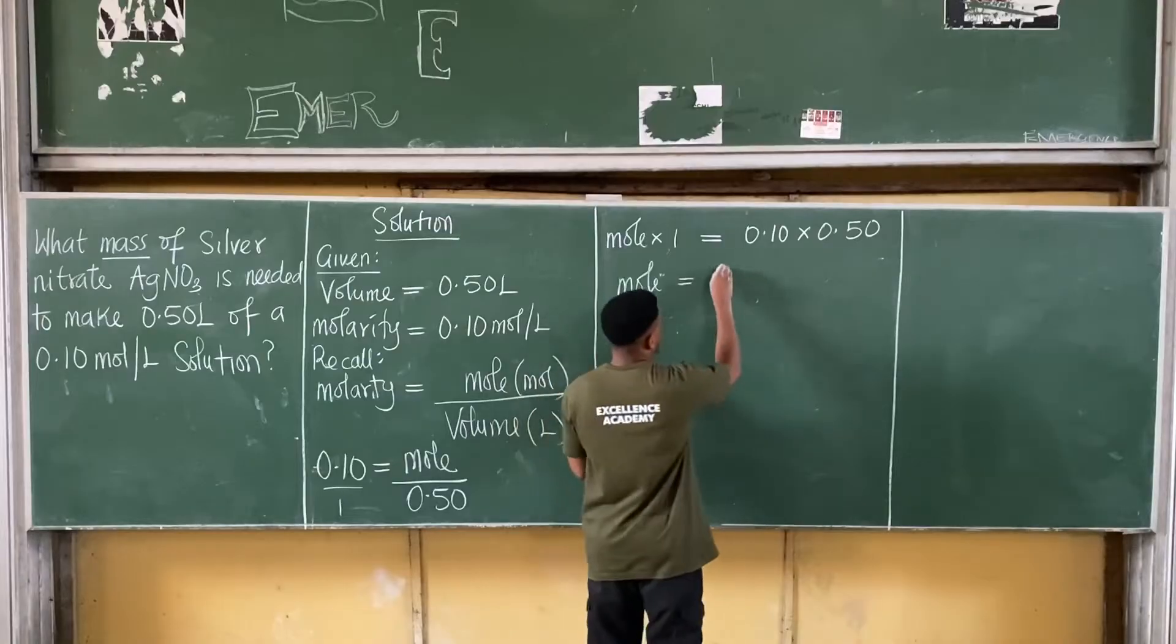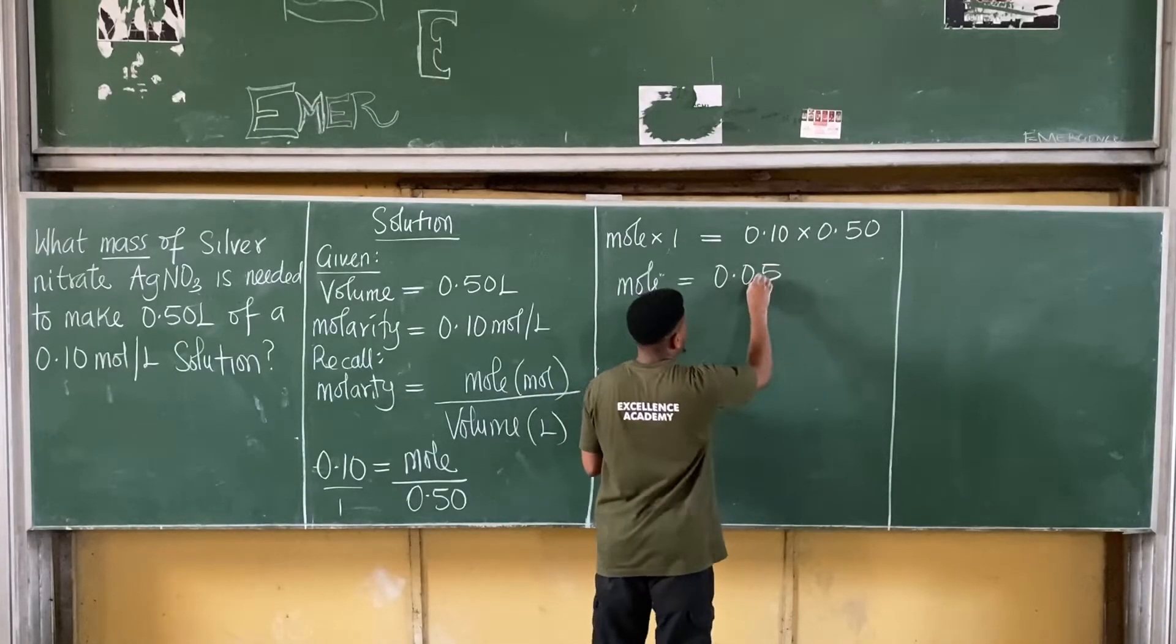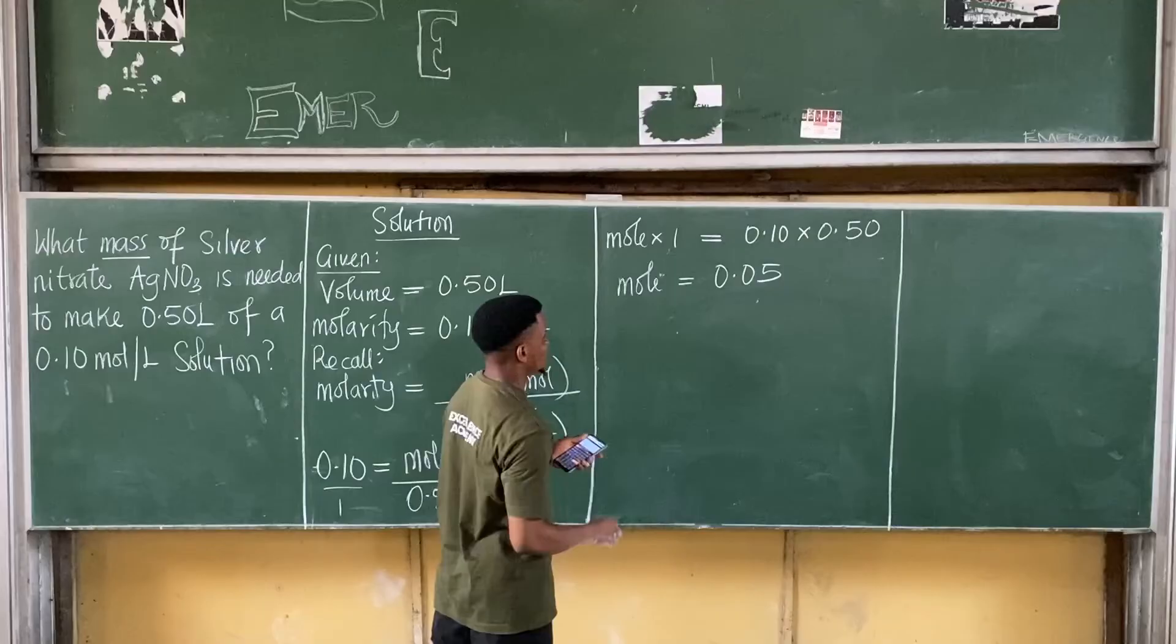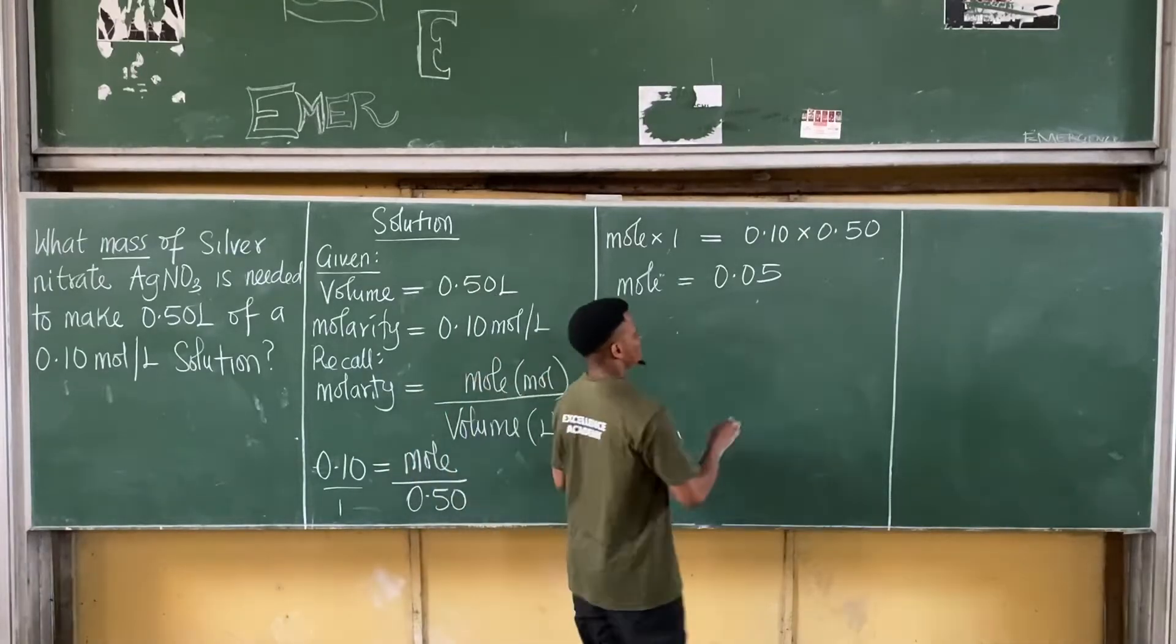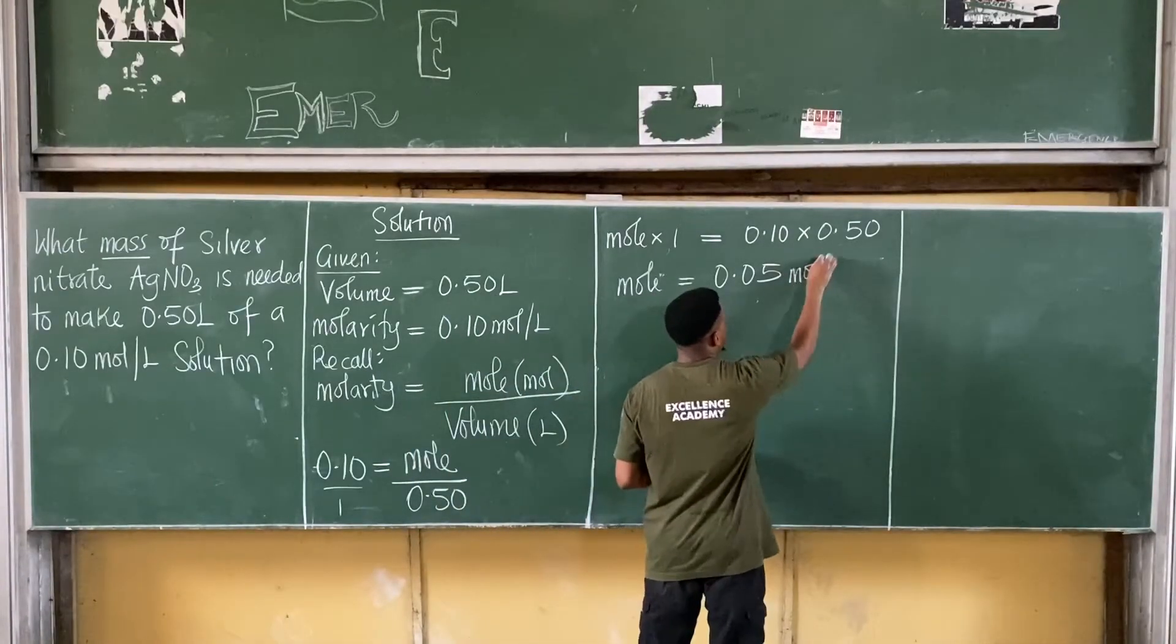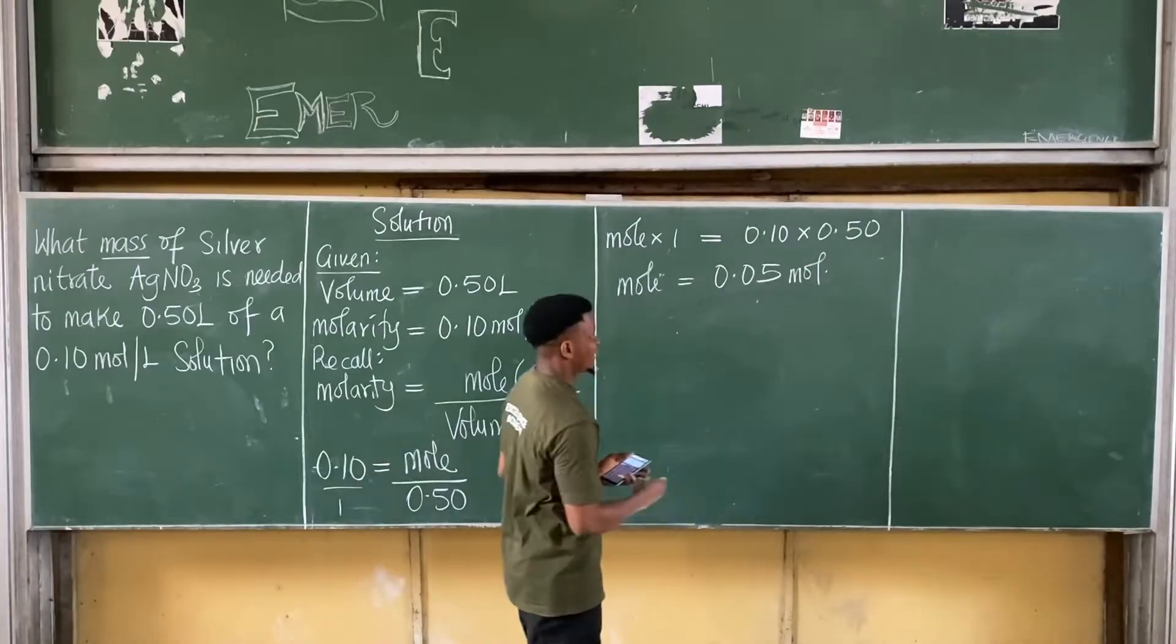I'm having 0.10 times 0.50. This gives you about 0.05. If you multiply this two, you have 0.05 moles. Moles is measured in moles as we said. Alright, so we've gotten this.